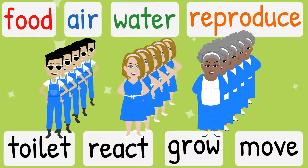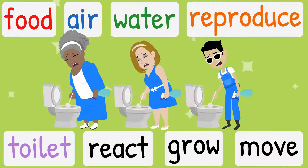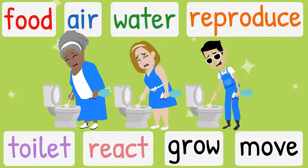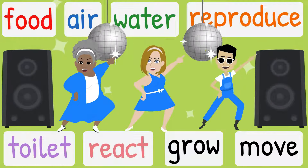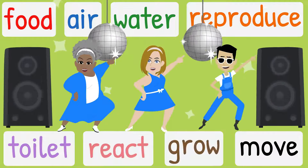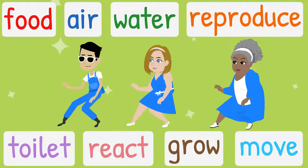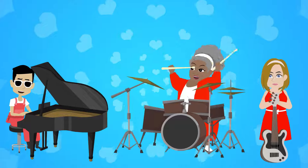Living things need food, air and water. Living things can reproduce and go to toilet. Living things react to their surroundings, living things can grow and move.